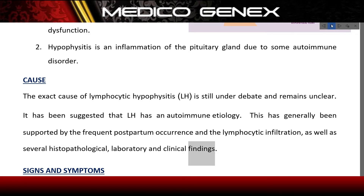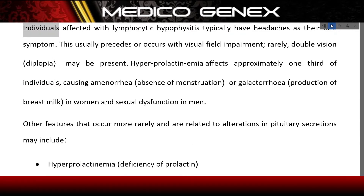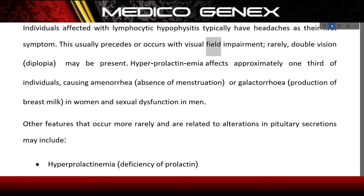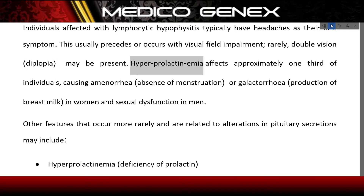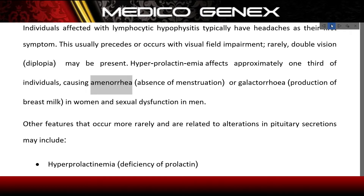Signs and symptoms: individuals affected with lymphocytic hypophysitis typically have headaches as their first symptom, which usually precedes or occurs with visual field impairment. Double vision (diplopia) may be present. Hyperprolactinemia affects approximately one-third of individuals.